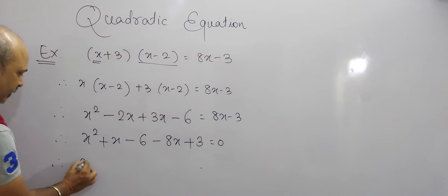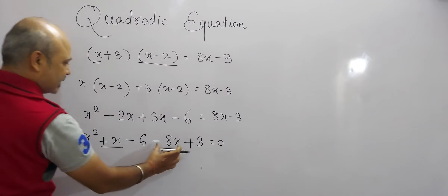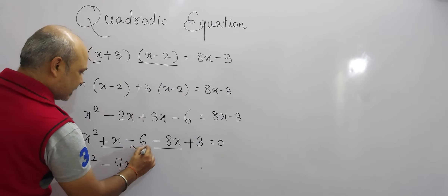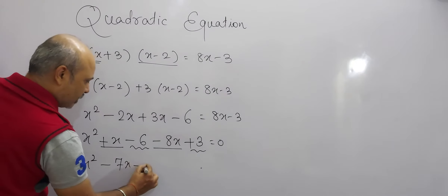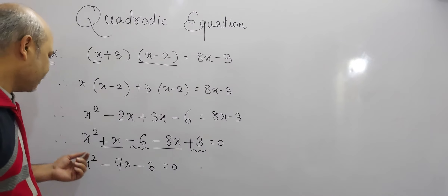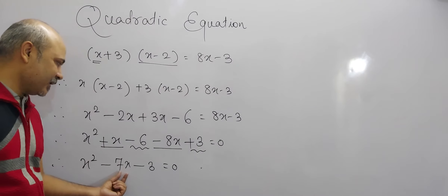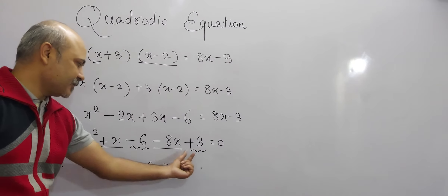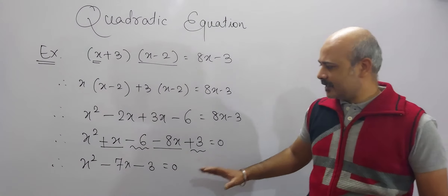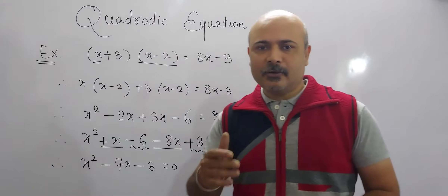So therefore this will be x squared. Now, plus x minus 8x is minus 7x, and minus 6 plus 3 is minus 3, and this is equal to 0. So we are getting the quadratic equation x squared minus 7x minus 3 equals 0.